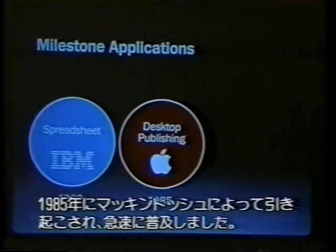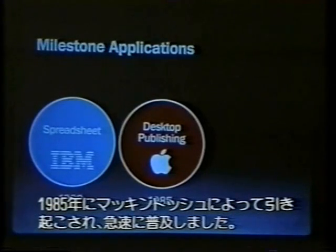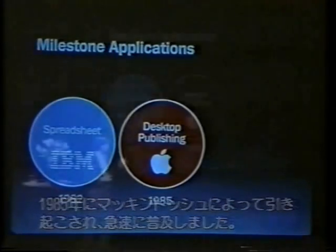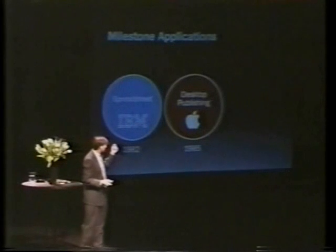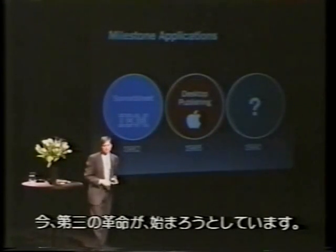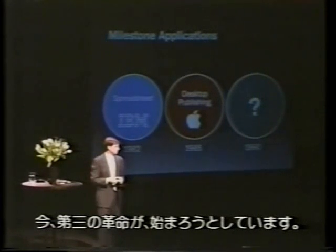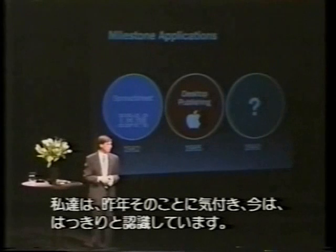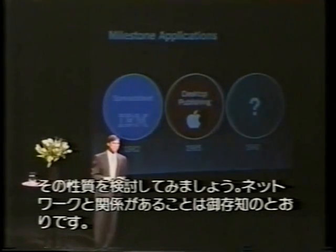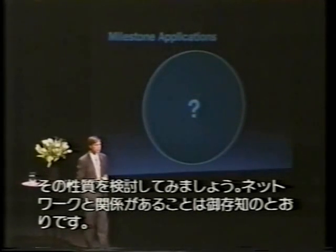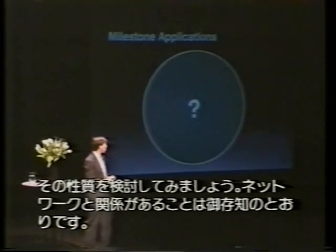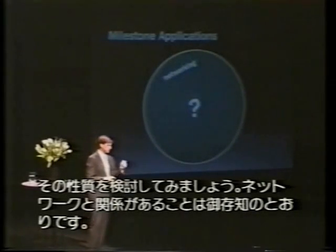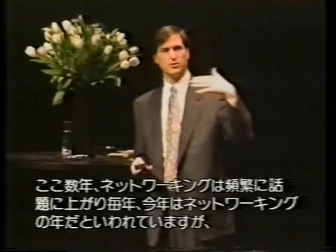What was the second revolution? Desktop publishing, circa 1985 — the Macintosh. That's what fueled the Macintosh, and I remember the early days of desktop publishing and how rapidly it started to spread. There is a third revolution starting. We get asked about it a lot: what is the next revolution? We started to understand it about a year ago and we really understand it pretty well now. Let's examine what the nature of it is.